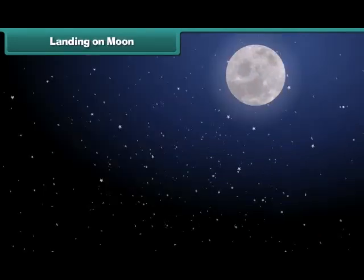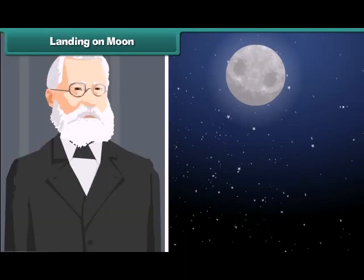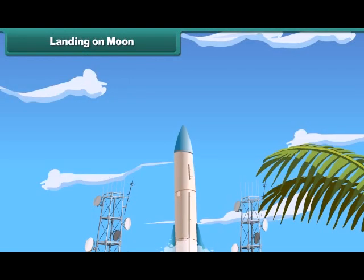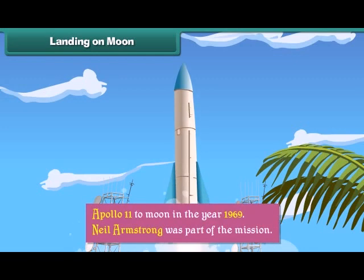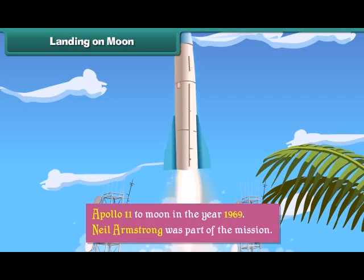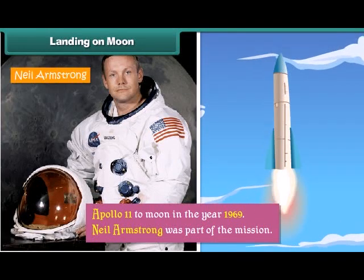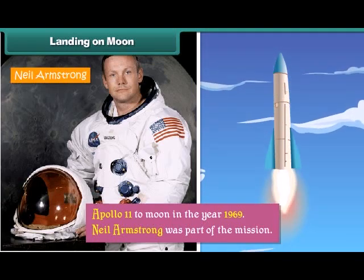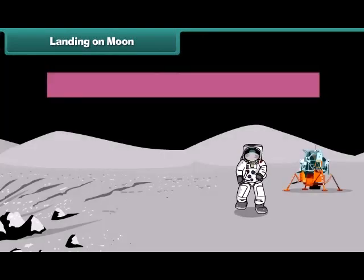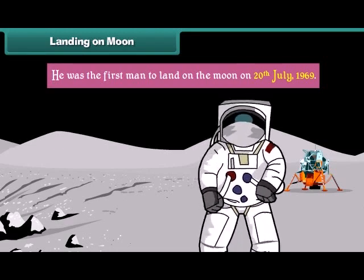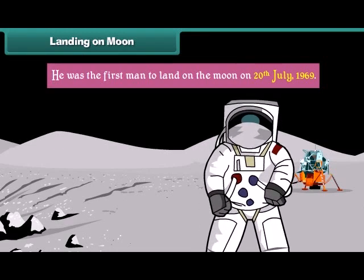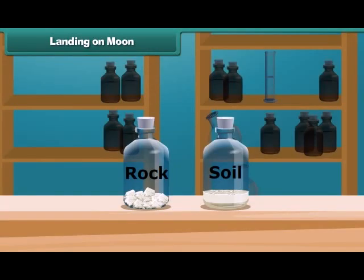Landing on moon: Even though life is impossible on the moon, it continues to fascinate scientists. They wanted to learn more about it, so they sent a mission called Apollo 11 to the moon in 1969. Neil Armstrong was part of the mission. He was the first man to land on the moon on 20th July 1969. He performed various experiments on the moon and brought back samples of soil and rock.